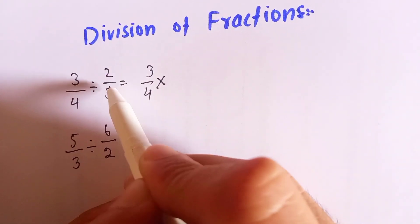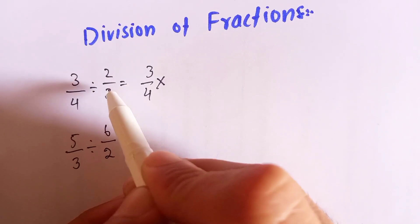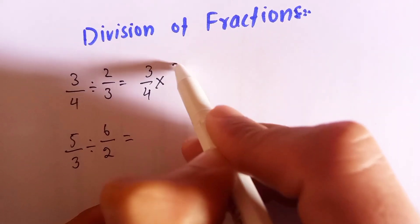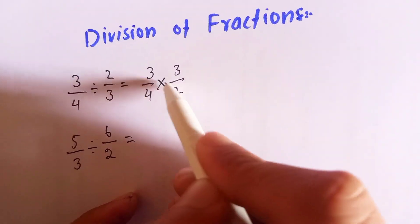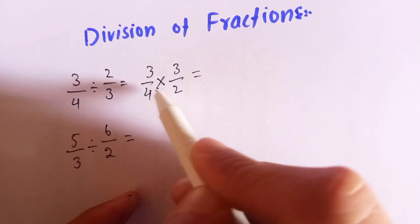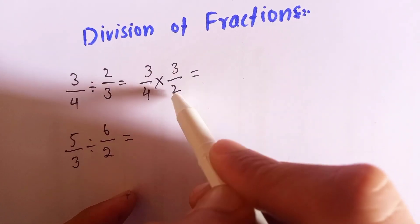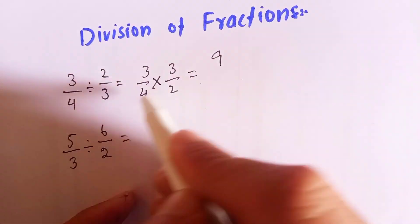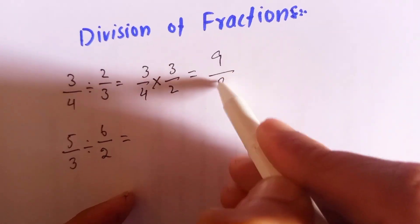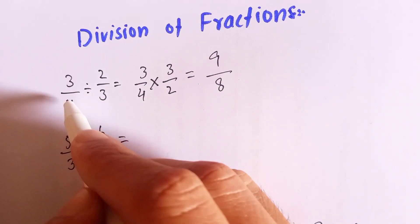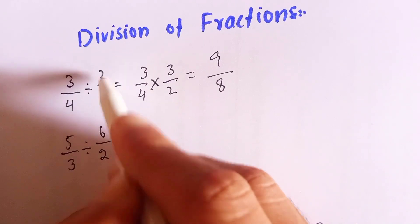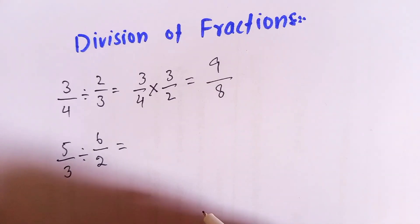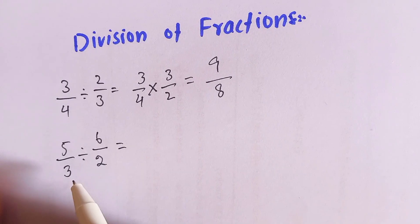Here we see that this is division and we wrote multiplication. Now, what to do with this fraction? We will invert this fraction — here it is 2 over 3, and we will write it as 3 over 2. So we wrote multiplication instead of division. Simply multiply 3 over 4 and 3 over 2: 3 times 3 is 9, and 4 times 2 is 8. So 3 over 4 divided by 2 over 3 equals 9 over 8.